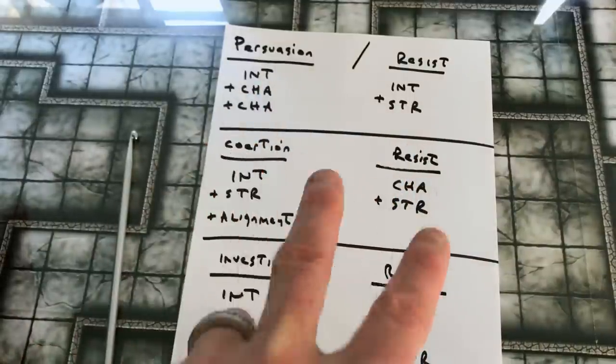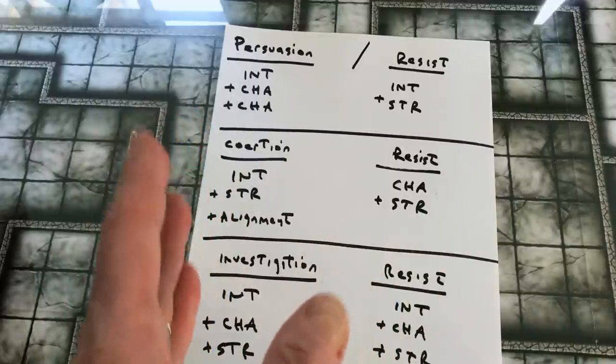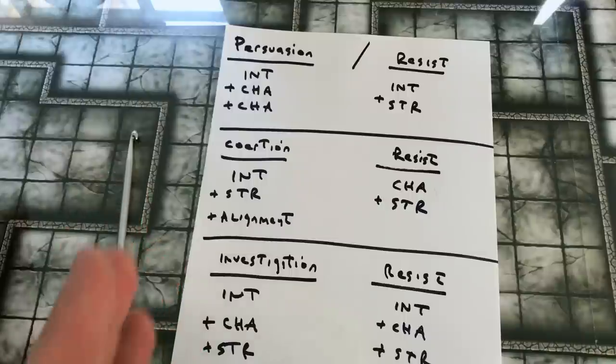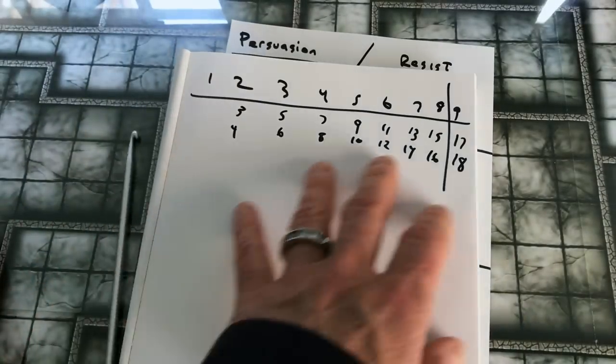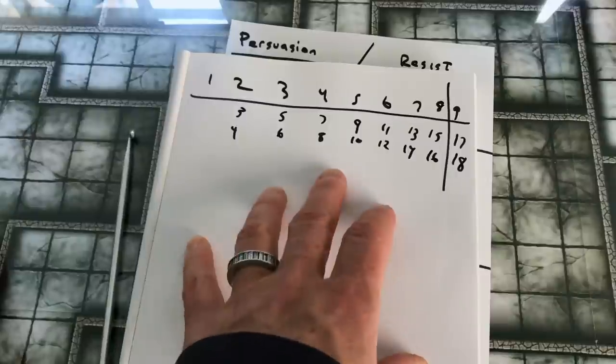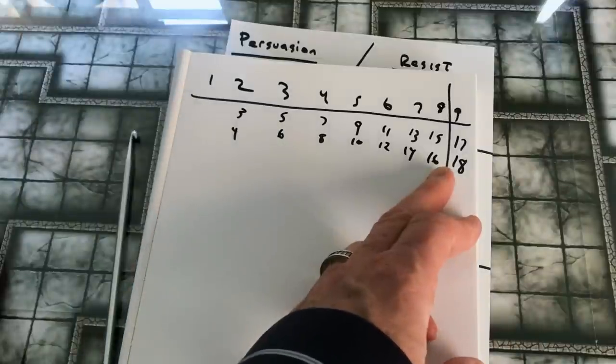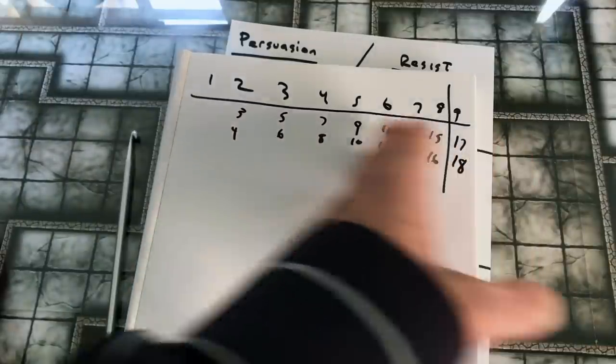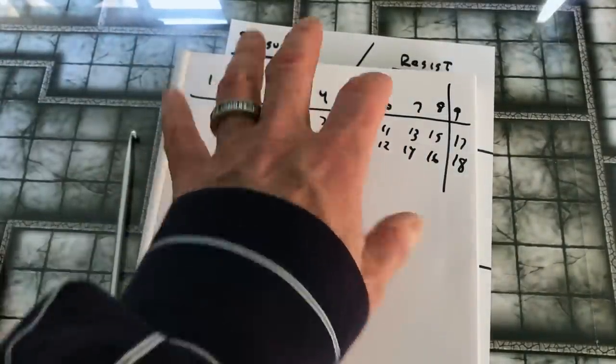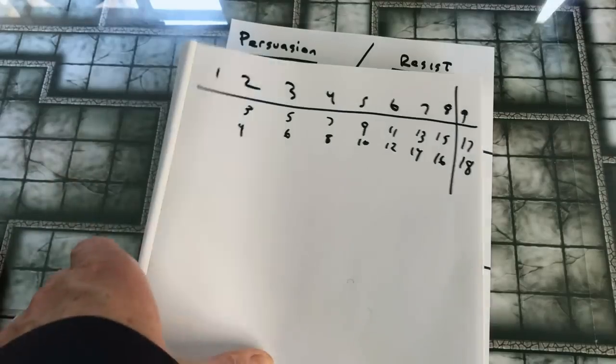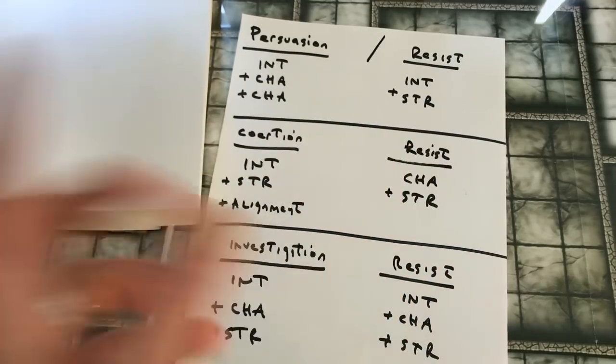And then finally on investigation we have the investigative value as being intelligence, charisma and strength combined, and the resistance to that is also the same: intelligence, charisma and strength on the target character. So these are the three different aspects and how the numbers, the values are being attained. A second thing you need to do is to translate these values because in Dallas the values of everything are on a scale of 1 to 9, and obviously that is not the case in D&D. I did a very basic conversion, taking the values that we could possibly get in D&D and assigning them so that I translate all the stats to a numeric value that works in the Dallas game.